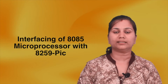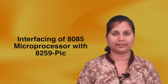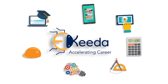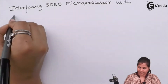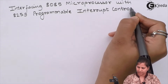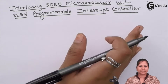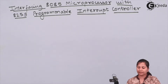Hello friends. In this video we will study the interfacing of the 8085 microprocessor with the Programmable Interrupt Controller 8259. This controller is used by the 8085 microprocessor to provide priorities to interrupts and to handle multiple interrupts.